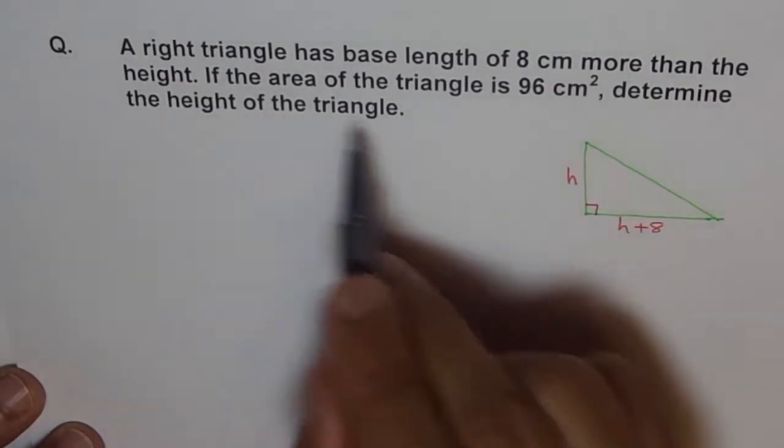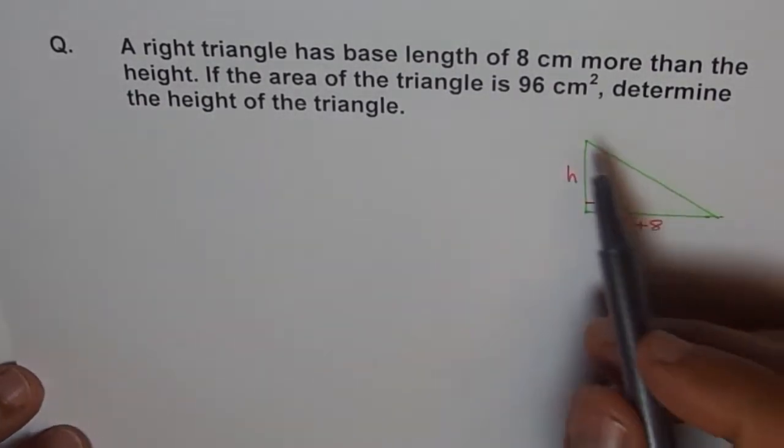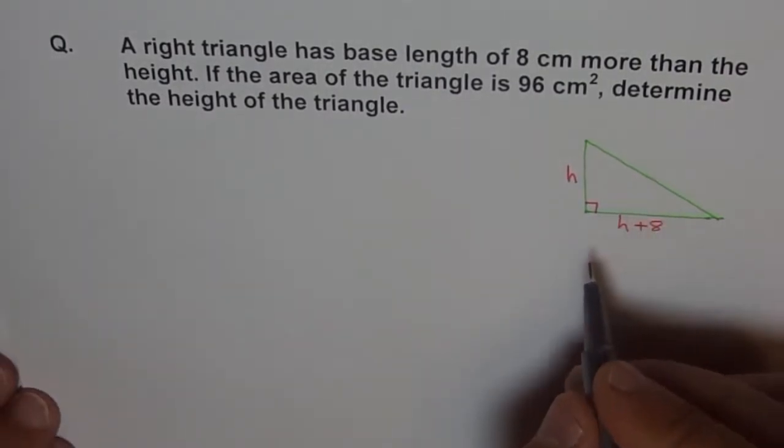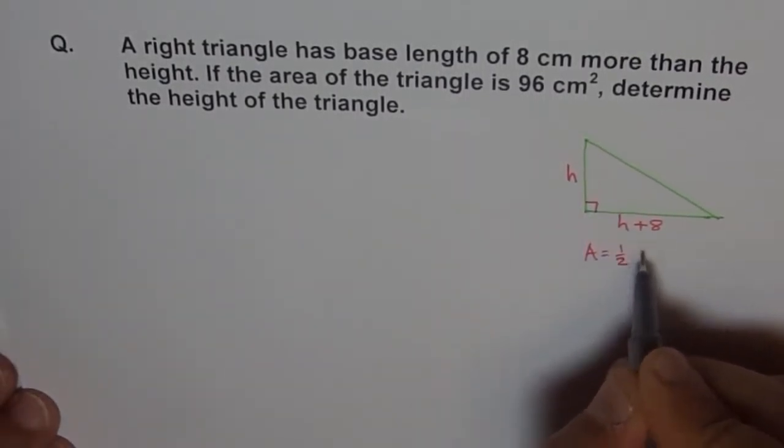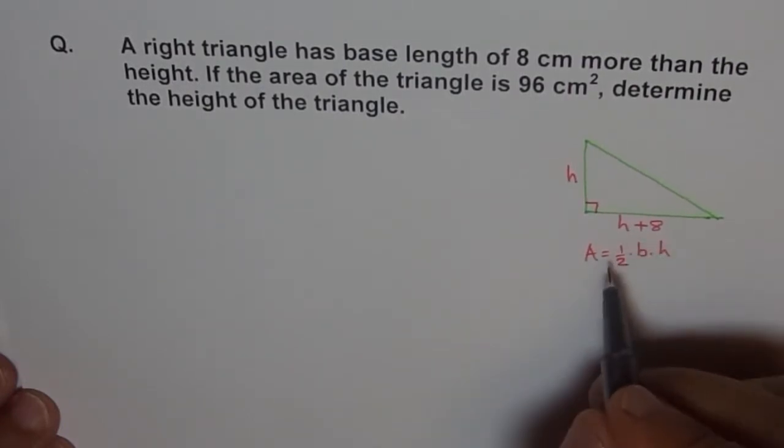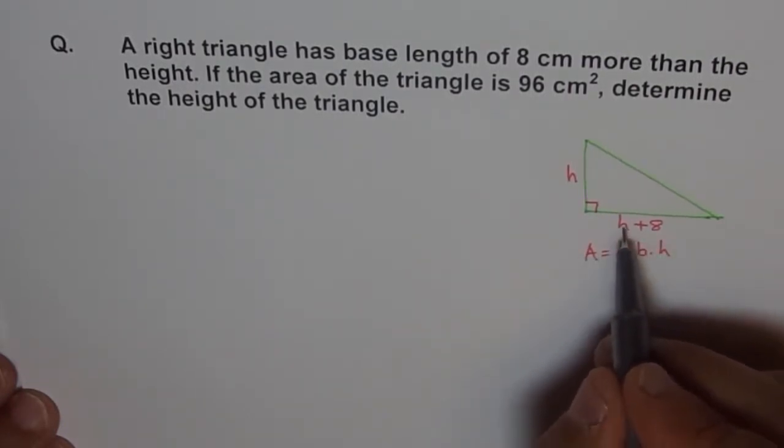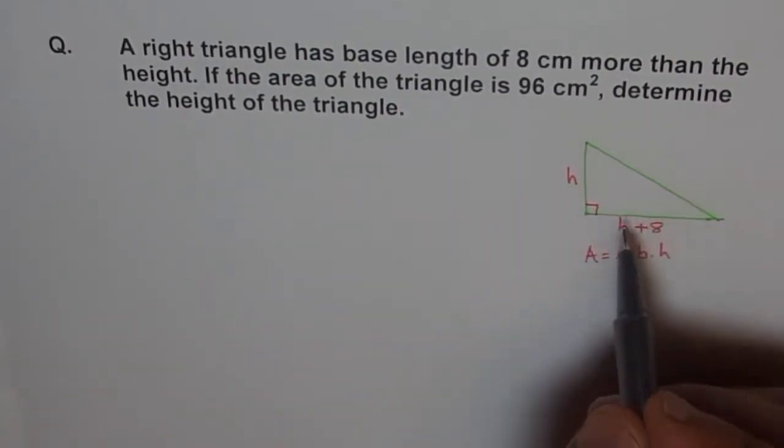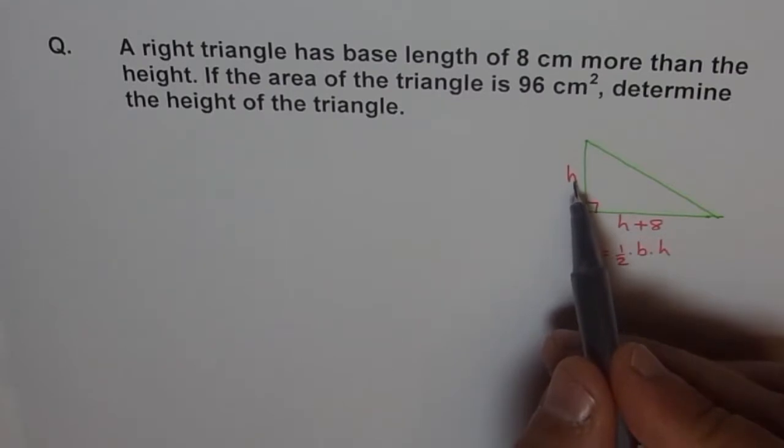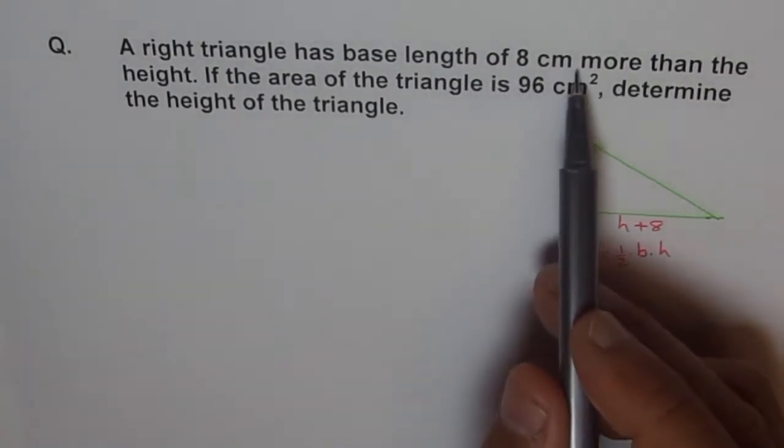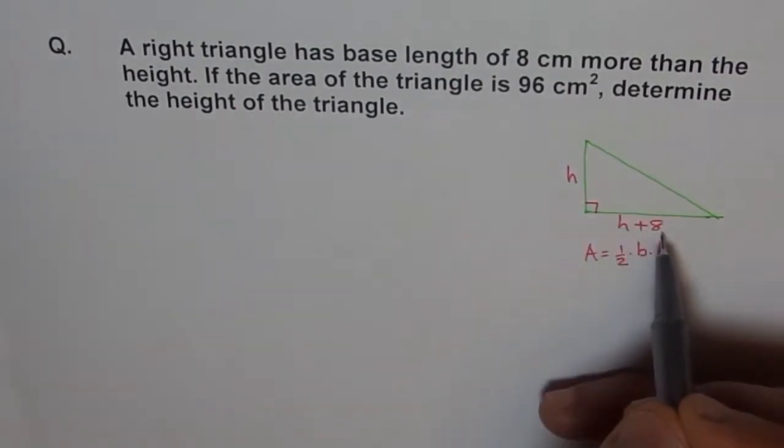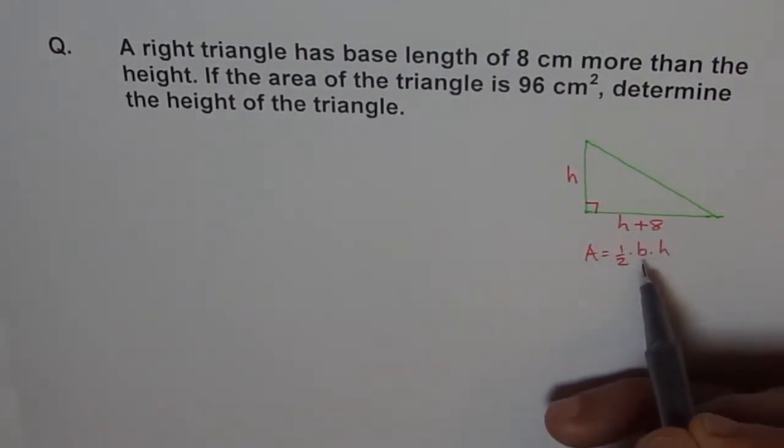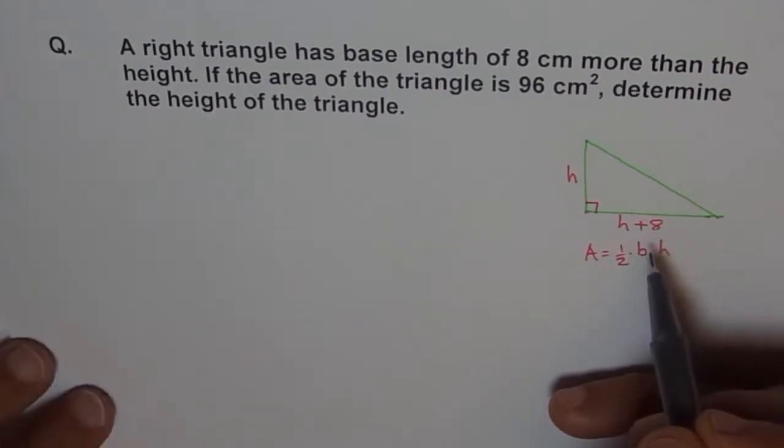The area of the triangle is given as 96 cm. What is area of a triangle? Area of the triangle is half of base times height. So, in a way, we have already done it in single variable. We could have done like this: let the base be b and height be h. Base length is 8 cm more than height, so base is h plus 8.